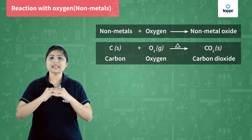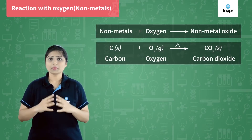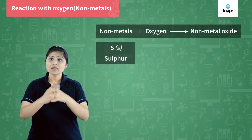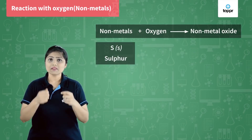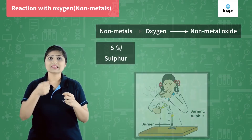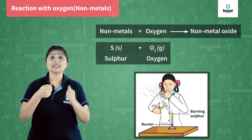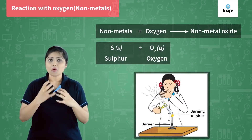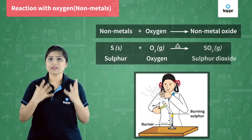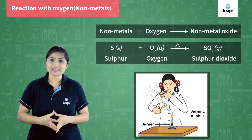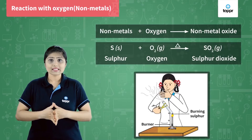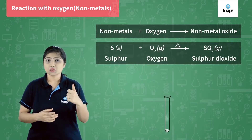Let's see one more non-metal, that is sulfur. When we take sulfur powder in a spatula and heat it, it forms sulfur dioxide gas. We collect this gas in a test tube.